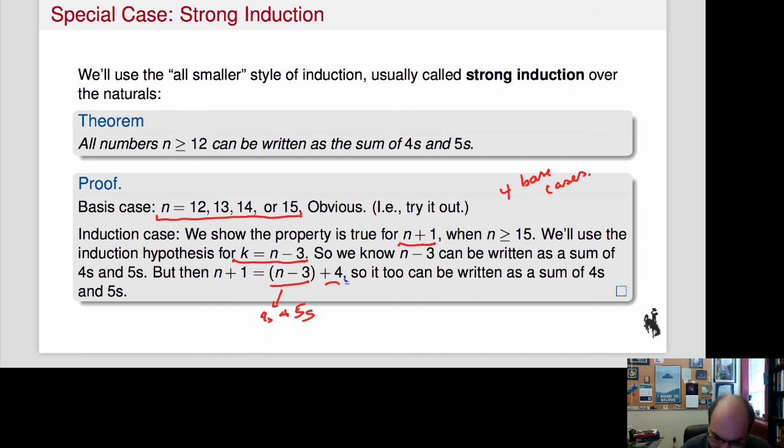And notice, it's kind of interesting because, for example, why is P of 16 true? Well, P of 16 is true because P of 12 implies P of 16. Now let's look at P of 17. Well, that's true because P of 13 implies P of 17. Now from P of 16, I'll get 20. From P of 17, I'll get 21, and so on. So there's not actually a nice chain that goes from 21 all the way down to 12. It's staggered. And that's also why I need all of these base cases.